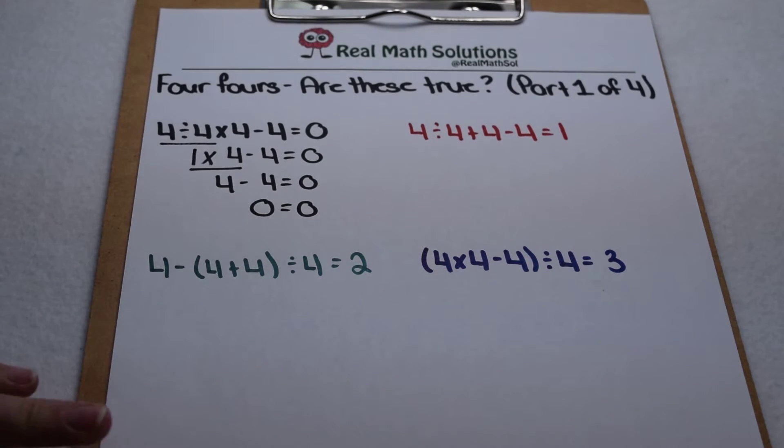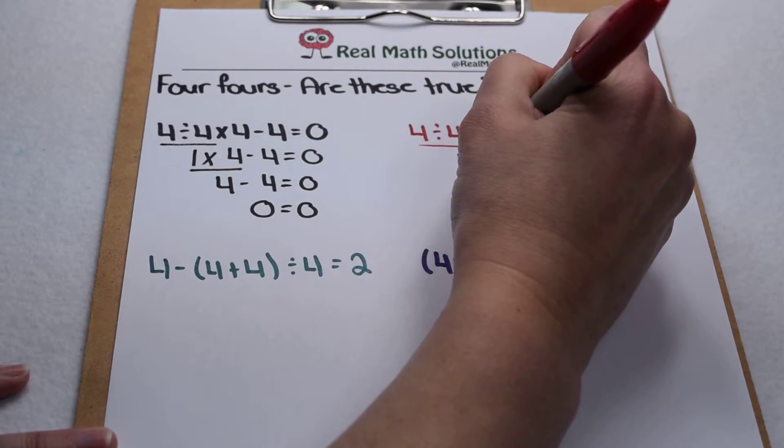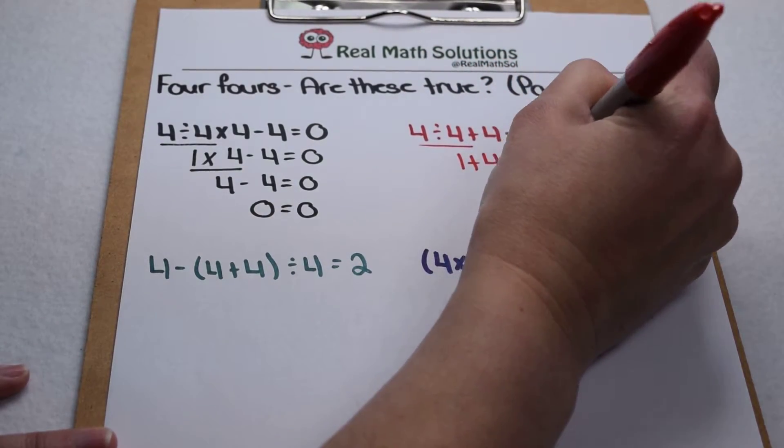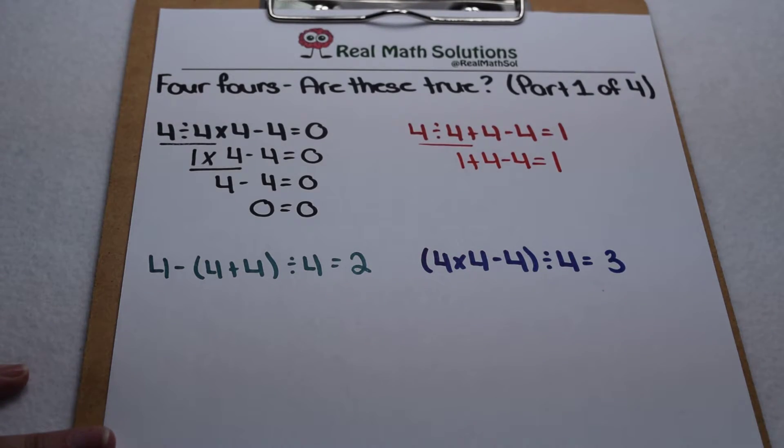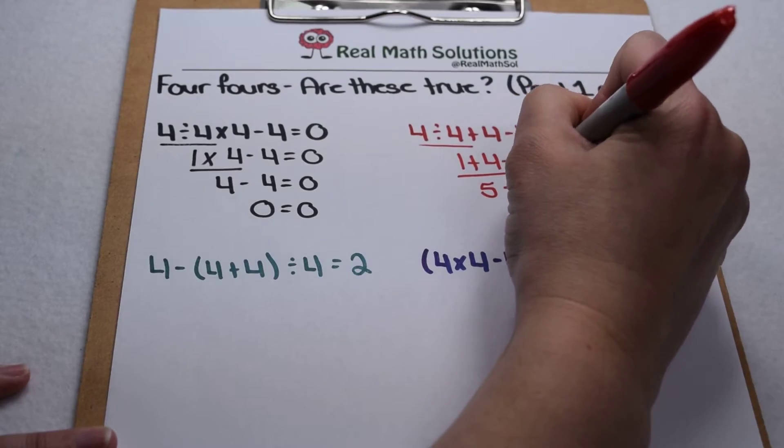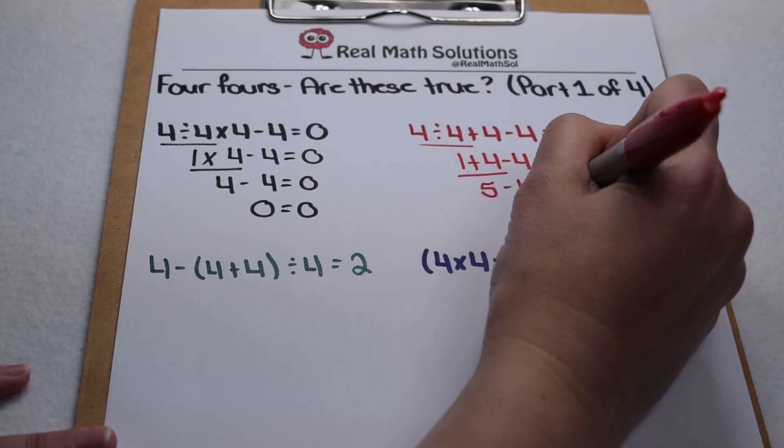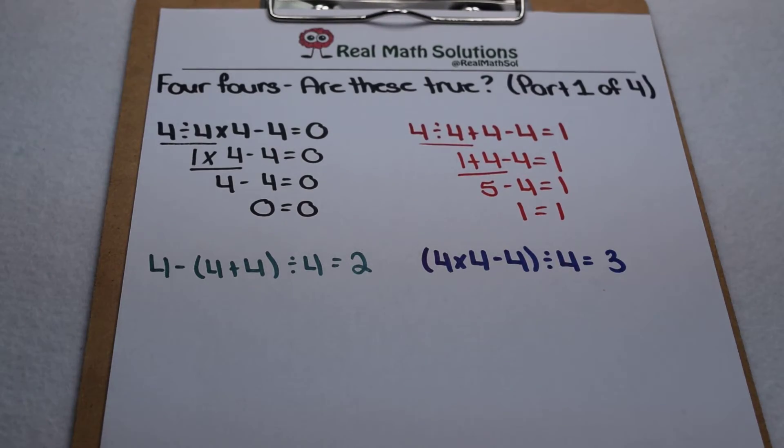Moving on to the next one, again order of operations we divide first, so that leaves us with one plus four minus four equals one. Now we work our addition and subtraction from left to right. One plus four gives us five, so that leaves us with five minus four. Five minus four equals one, so one does equal one. That one also works.